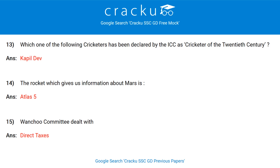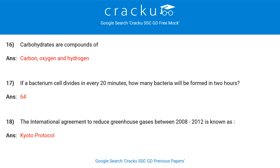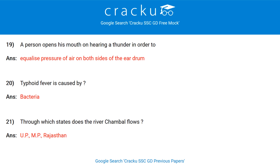The rocket which gives us information about Mars is Atlas V. Vancho committee dealt with direct access. Carbohydrates are compounds of carbon, oxygen and hydrogen. If a bacterium cell divides every 20 minutes, how many bacteria will be formed in 2 hours? 64. The international agreement to reduce greenhouse gases between 2008 to 2012 is known as the Kyoto Protocol.